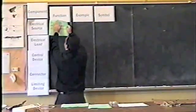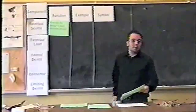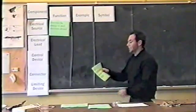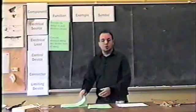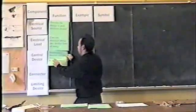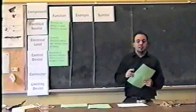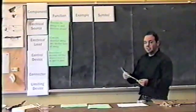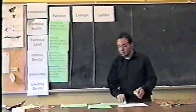In the handout from last class, there's a chart at the bottom you can fill in as we go. The electrical load converts electrical energy into another form of energy — in home circuits, a useful form. A control device, like a switch, determines if the electrons will flow — open or closed. A connector provides a path for the electrical source to pass energy to the load. And a limiting device limits the amount of current going through.